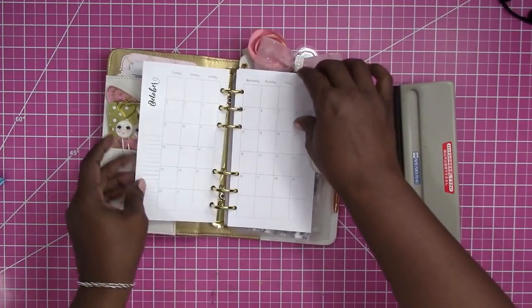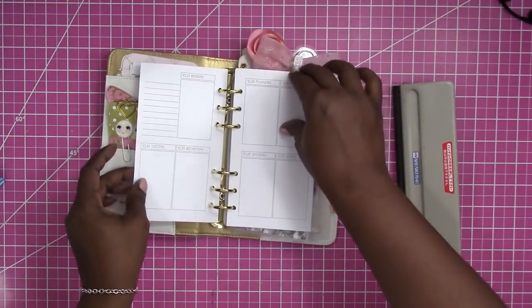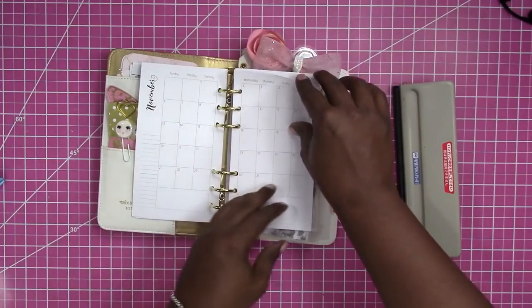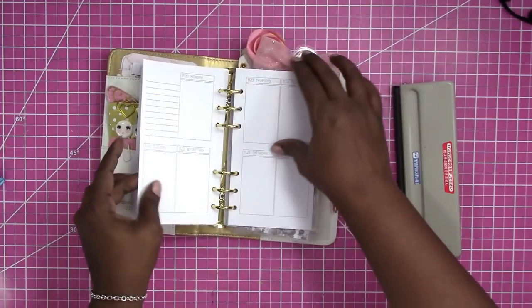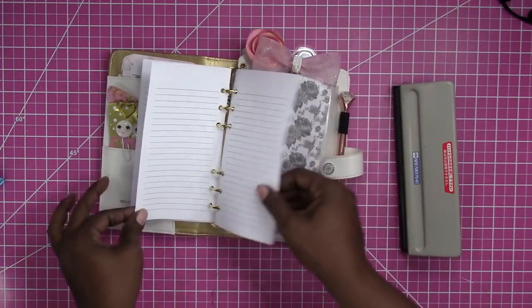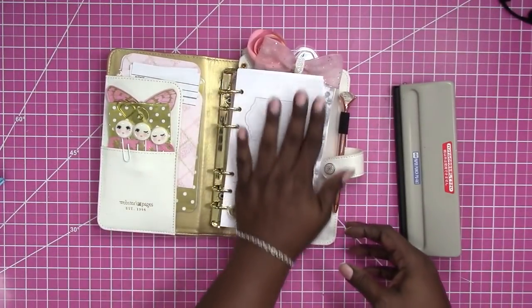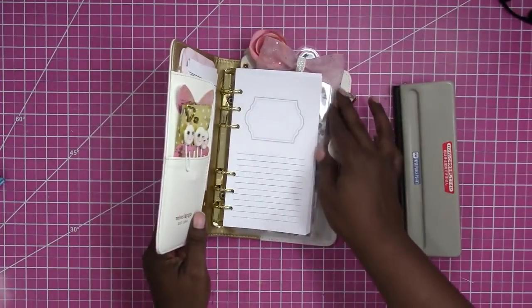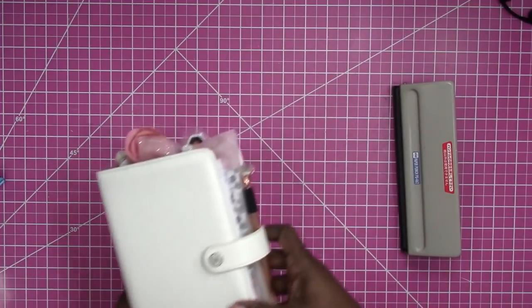So there you have it. This is the personal size for October. These are our dated inserts. November and December. Then you have some note pages also. Okay so that is in the binder and ready to go. Ready to be used. So set this one aside.